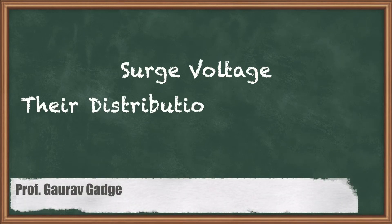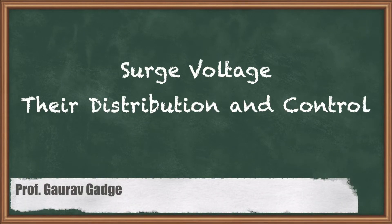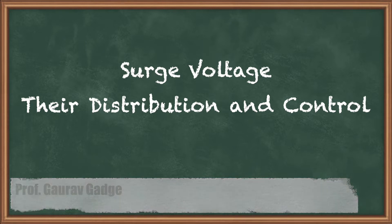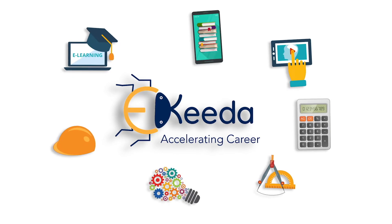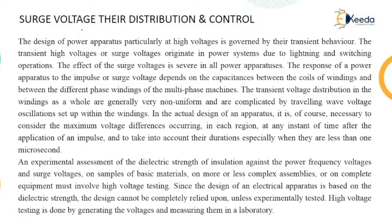In today's class, the topic we are going to discuss is surge voltage, their distribution and control. A surge voltage means a voltage which appears in the power system due to a sudden rise in voltage — that is called a surge voltage.